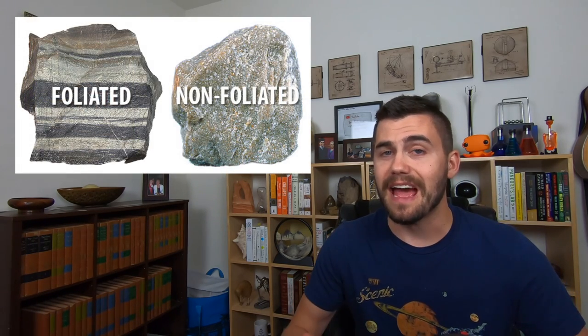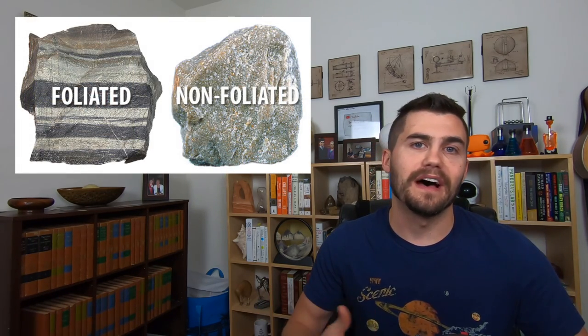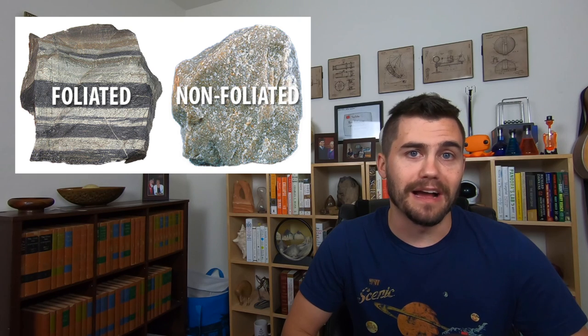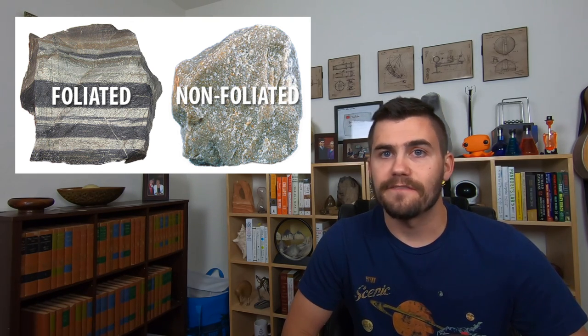Foliated metamorphic rocks have these distinct bands, while non-foliated rocks do not. Gneiss, phyllite, and mica schist are examples of foliated metamorphic rocks. Marble and quartzite are examples of non-foliated metamorphic rocks.